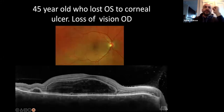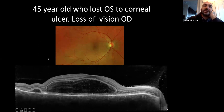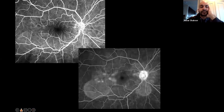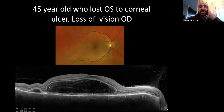Here's a 45-year-old lady who lost the left eye to a corneal ulcer and had lost vision in the right eye. On OCT, Cole, what kind of neurosensory retinal detachment is this? That's a bacillary detachment — you have the neurosensory detachment, the bacillary detachment, with the outer retinal remnant.